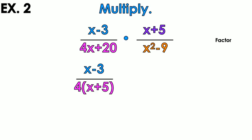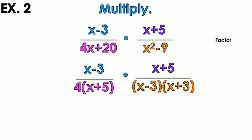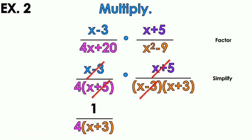The other fraction: x plus 5 cannot be factored, so I leave that alone. x squared minus 9 — I can factor that as a difference of two squares, giving me x minus 3 times x plus 3. Now I look for what I can simplify as common factors. x minus 3 on top and x minus 3 on the bottom simplify out. x plus 5 on top and x plus 5 on the bottom simplify out. On top, nothing is left, so that's a 1. On the bottom, I have the 4 and x plus 3.